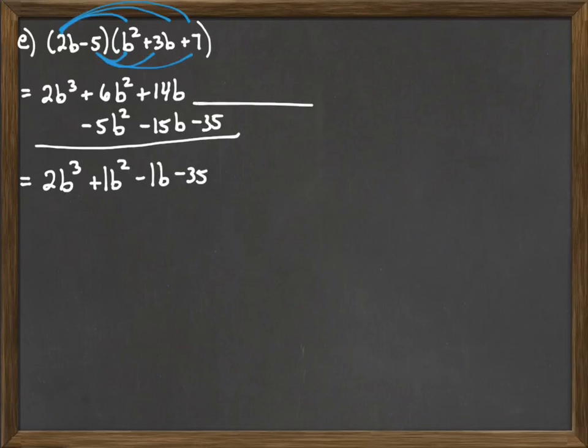Otherwise, you just have this big long string of things. And it can be a little more confusing, a little more work to match up your like terms. But if you proactively align your like terms as you're writing it down, then you'll be able to keep the problem a little bit straighter.